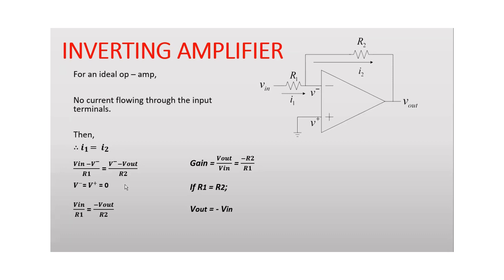For the ideal op amp, the voltage difference between the minus terminal and the plus terminal is zero. Then we can say that V minus is equal to V plus. That is equal to zero since this V plus terminal is grounded. So the voltage at this point is zero and that is equal to V minus.